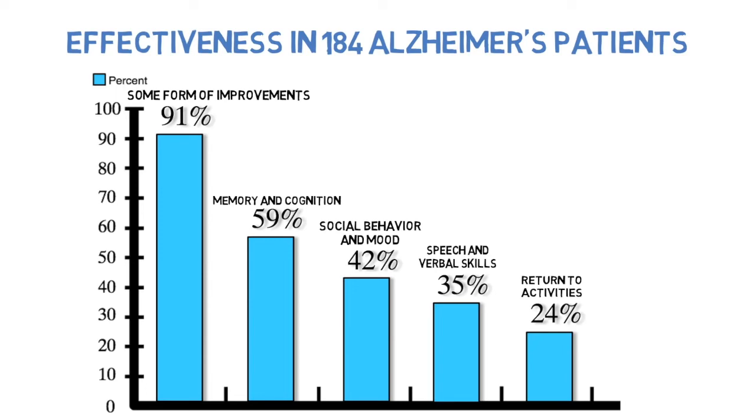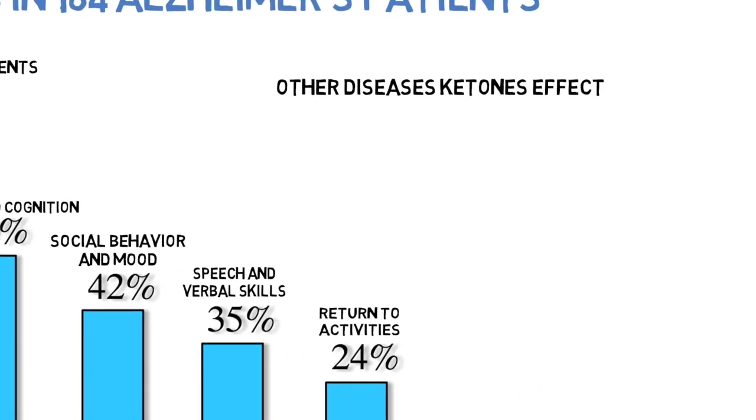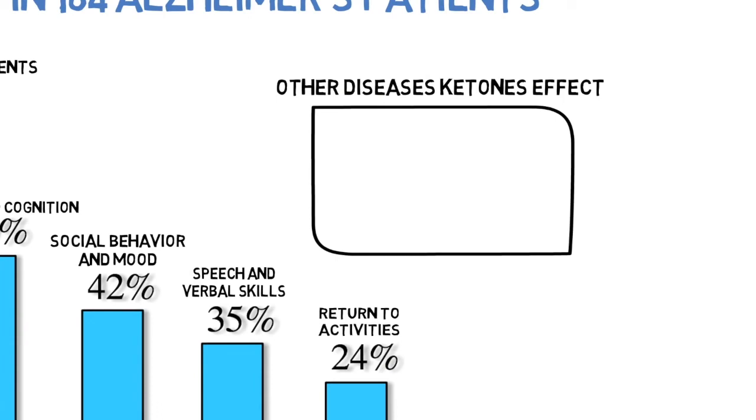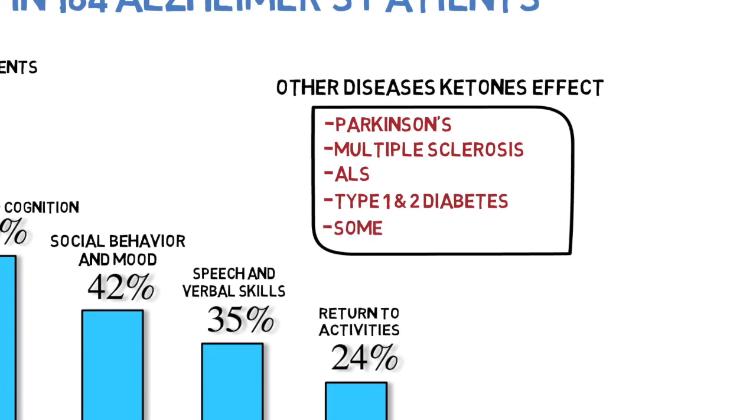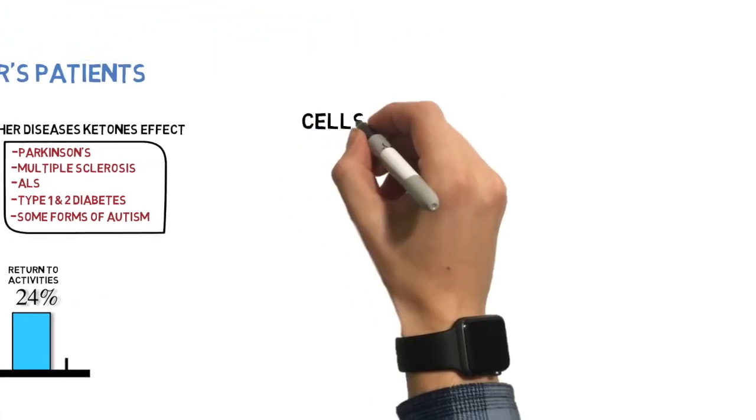Through this same method of ketones providing new energy pathways, a ton of other diseases can be effectively treated. Diseases like Parkinson's, multiple sclerosis, ALS, type 1 and 2 diabetes, and ketones have even shown improvements in some forms of autism. These new energy pathways aren't the only way in which ketones can treat and prevent diseases.